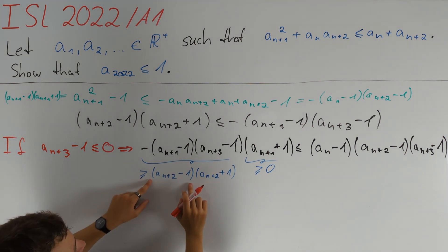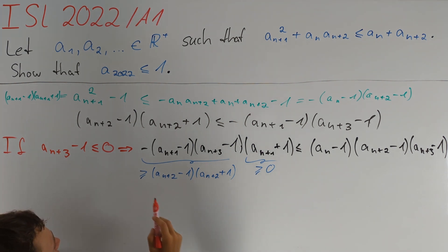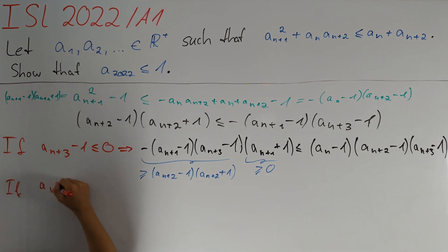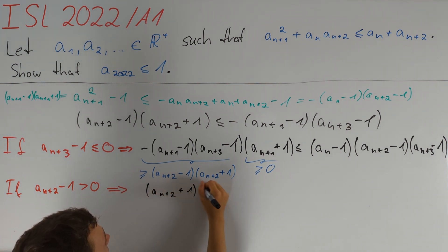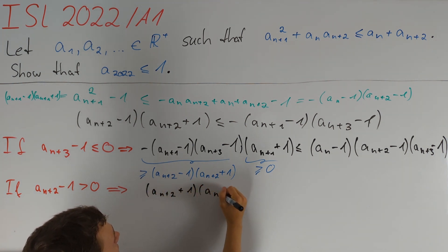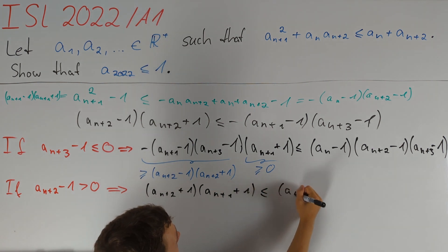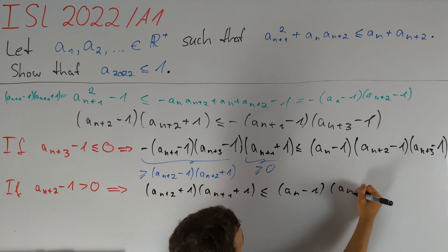Now we have (aₙ₊₂ minus one) on both sides, so we want to divide by it, and as before we have to make a sign choice. Let's assume that aₙ₊₂ minus one is greater than zero. This yields (aₙ₊₂ plus one)(aₙ₊₁ plus one) is less than or equal to (aₙ minus one)(aₙ₊₃ minus one).